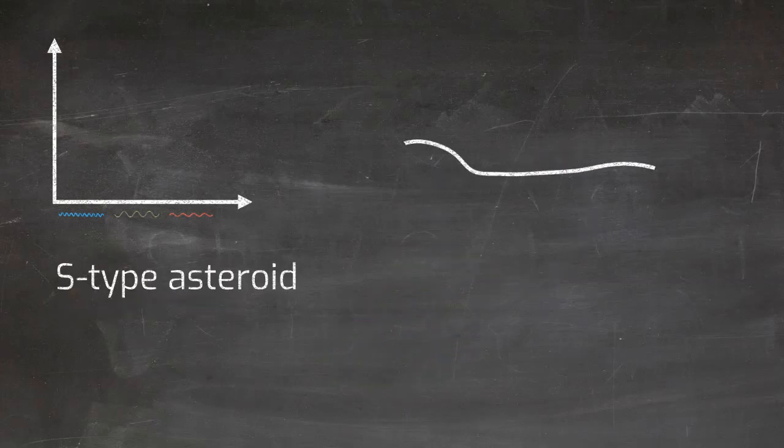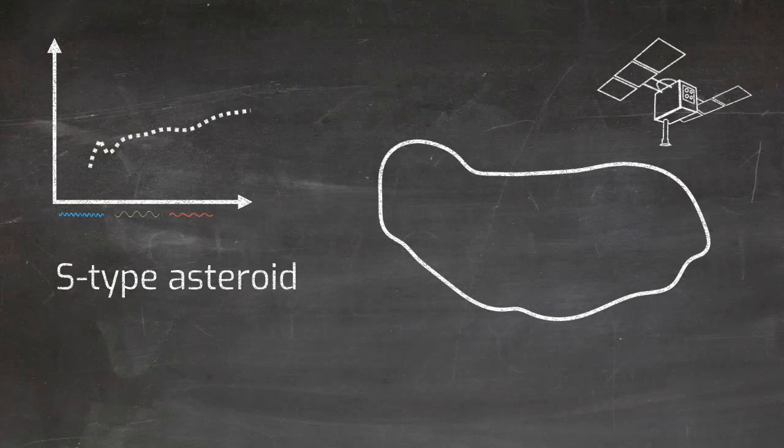S-type asteroids, such as Itokawa, which was visited by the Hayabusa mission, have a moderate albedo and a red spectrum. The asteroids are primarily composed of silicates, which absorb light that has a wavelength of about one micron. This creates a characteristic dip in the light spectrum.